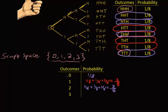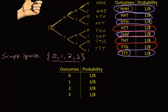Finally, the probability of getting three heads: that only happens once, up at the top of the tree, so we add in the probability one-eighth. The cleaned-up probability distribution table has probabilities of one-eighth, three-eighths, three-eighths, and one-eighth. It exhausts all possibilities — these are the only outcomes for the number of heads in three flips — and one-eighth plus three-eighths plus three-eighths plus one-eighth equals eight-eighths, which is one.